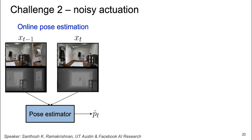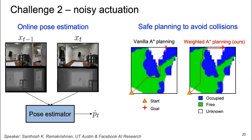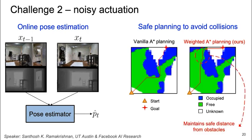Despite having this pose estimator, the large variance in the actuation noise eventually accumulates large drift. To handle this, we focus on navigating efficiently without colliding — less time spent navigating means less drift in the pose estimates. To achieve this, we perform safe planning to avoid collisions. This is done by reweighting the connectivity graph in A* to assign larger weights to regions near occupied space. As shown in this example, this allows an agent to maintain safe distance from obstacles to avoid collisions while retaining navigation efficiency.